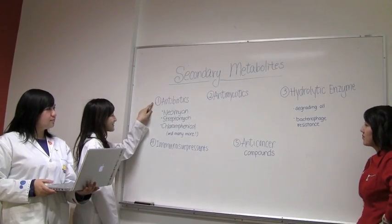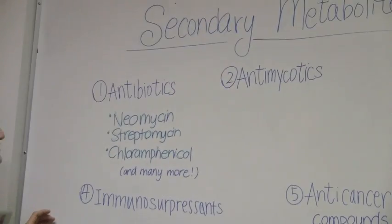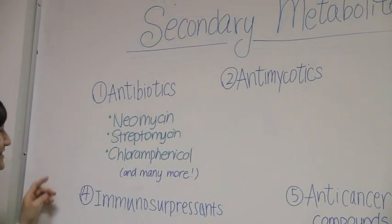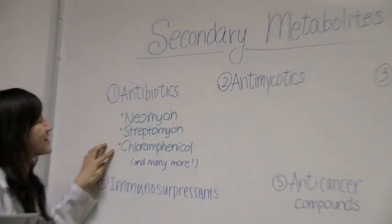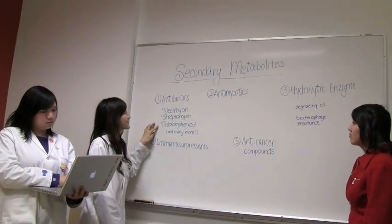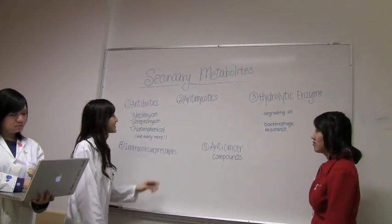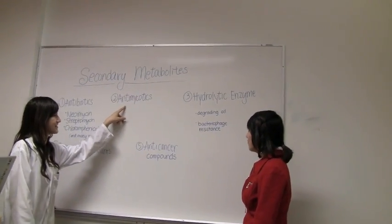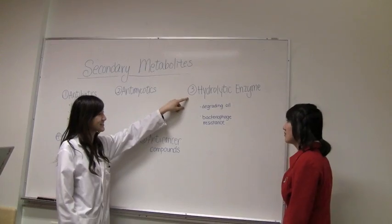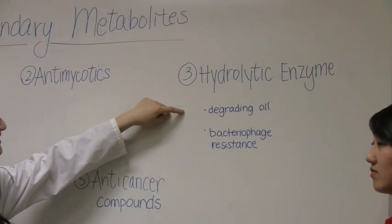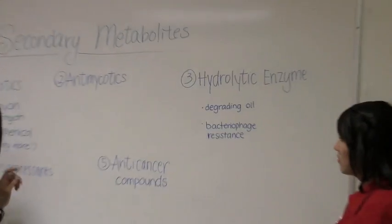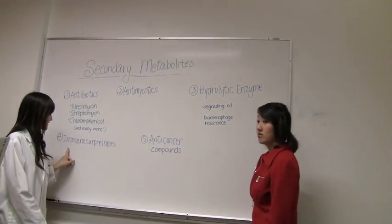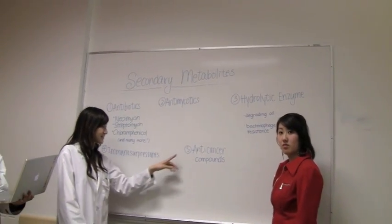We've already heard about Streptomyces' ability to produce antibiotics such as neomycin, streptomycin, and chloramphenicol. But did you know that they can also produce other secondary metabolites such as anti-mycotics, hydrolytic enzymes to degrade oil and protect against bacteriophages? They can produce immunosuppressants and they can also produce anti-cancer compounds.